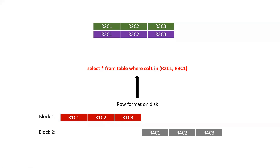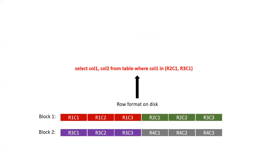There is one other scenario. Let's say the same table in row format - your data is stored in two blocks. You are doing a different kind of query where you are saying SELECT col1 AND col2 FROM table WHERE col1 is in these values. Same query as earlier, but this time instead of doing SELECT *, we are doing SELECT col1 and col2. We are only interested in two columns. So how will Spark prepare your results?